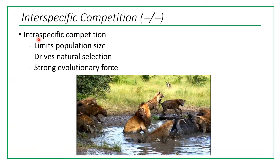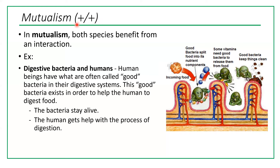Interspecific competition (minus-minus) — and inter means between species — limits population size and drives natural selection. It is a very strong evolutionary force. Another type of interaction, plus-plus, is called mutualism. In mutualism, both species benefit from the interaction. An example would be digestive bacteria and humans.